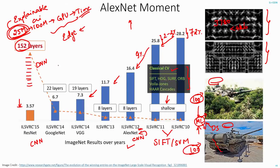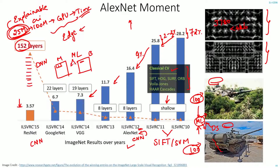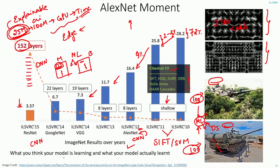A similar example: somebody tried to use a machine learning model to classify tumors as malignant or benign. On the images of malignant tumors, a ruler scale was attached to indicate the tumor size, but this ruler was not present on the benign tumor images. When the model made predictions, it was only looking for whether the ruler was in the image or not — it had nothing to do with whether the tumor was actually malignant or benign.